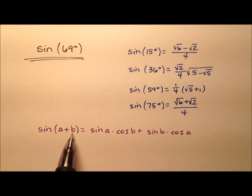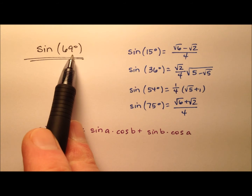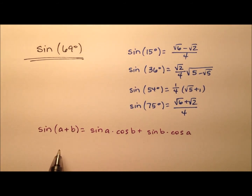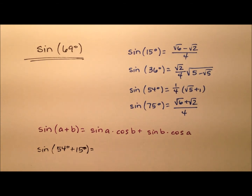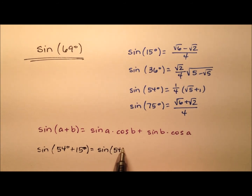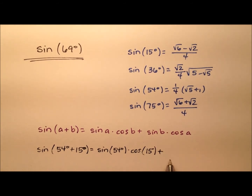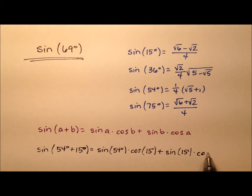So what values for a and b should we use so that they add up to 69 degrees and are nice angles to work with? Let's use 54 degrees and 15 degrees — they do indeed add up to 69 degrees. So our expansion is the sine of 54 degrees times the cosine of 15 degrees, plus the sine of 15 degrees times the cosine of 54 degrees.